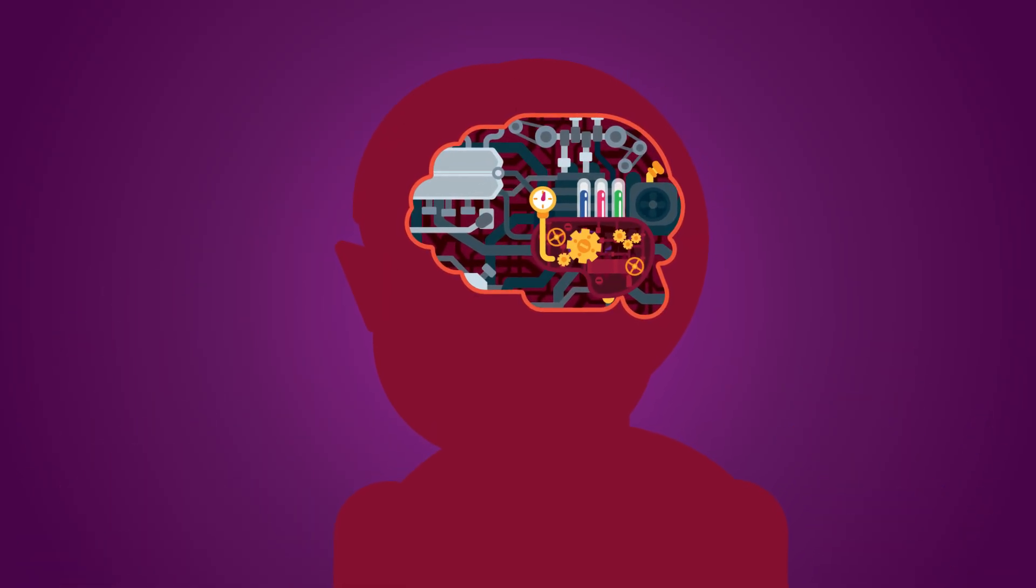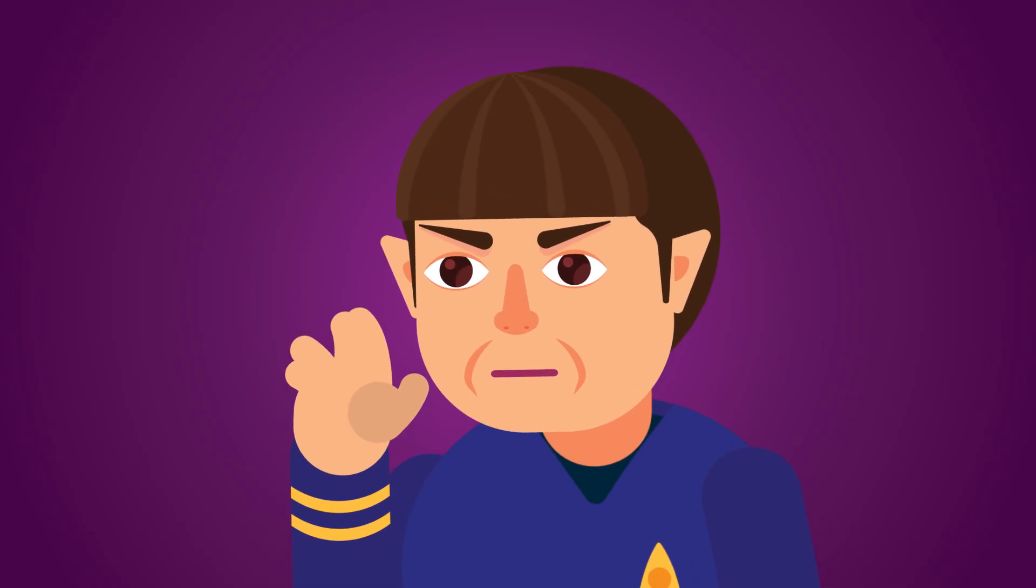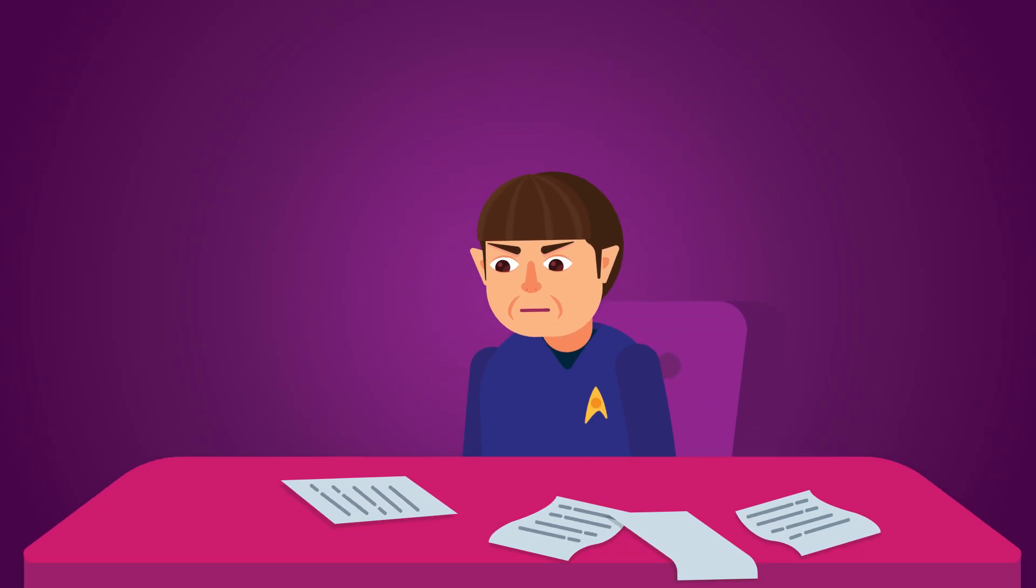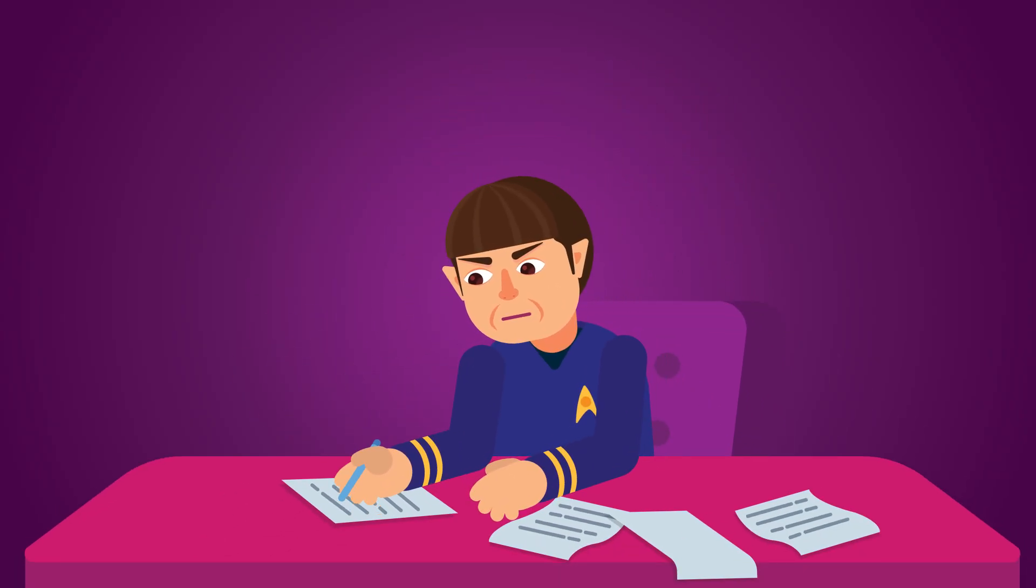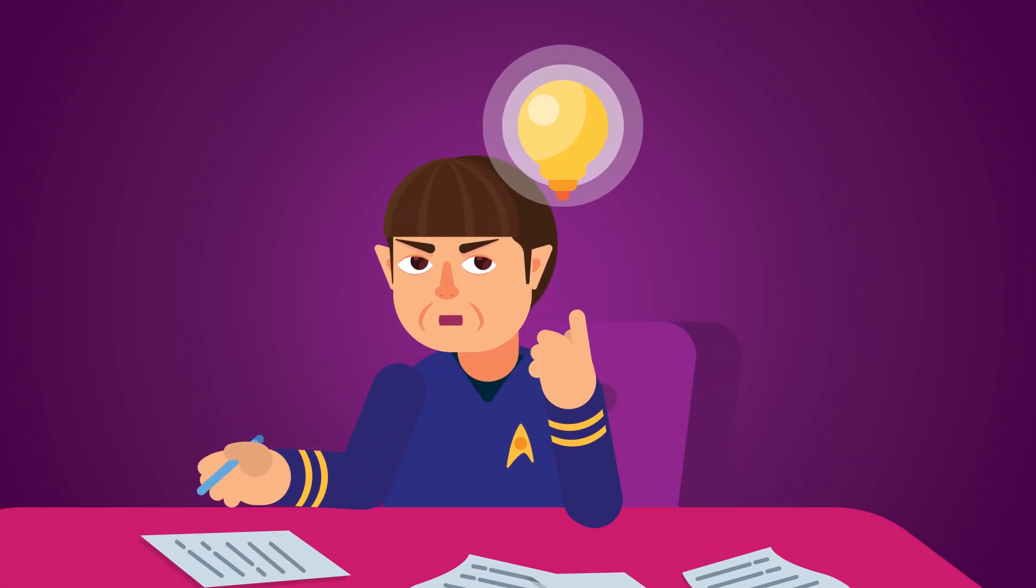You can think of the cerebral cortex as the rational, logical brain, sort of like Spock on Star Trek. It's not emotional, it's the planning, thinking part of our brain which comes up with clever ideas.